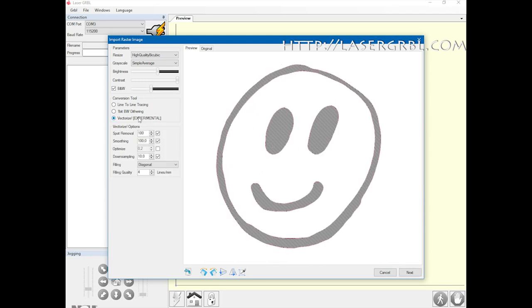We choose the vectorization tool and activate some rounding and smoothing filters. With the downsampling control, we can extract only the main part of the image.